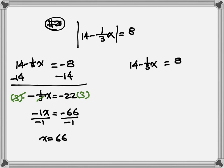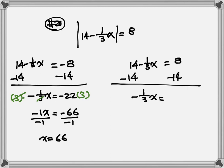Right equation: subtract 14 from both sides — negative one-third x equals negative 6. This time multiply by negative 3 to clear the denominator and the negative sign: the 3s cancel and the negatives cancel, so x equals 18.